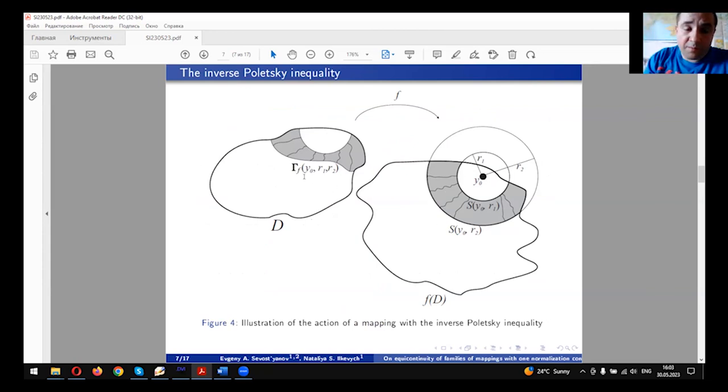Consider the family of paths joining the concentric spheres centered at y_0 and of the corresponding radii. Γ_f(y_0,R_1,R_2) are in the pre-image in the domain D. This is the family of paths joining some sets such that its image belongs to the corresponding family of paths in f(D).